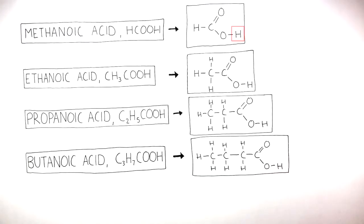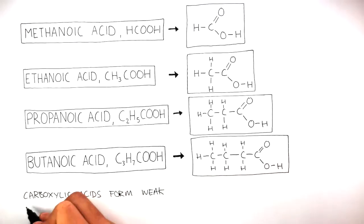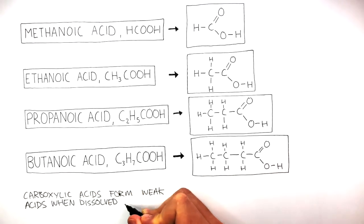It's this hydrogen atom on the carboxylic acid functional group which makes these carboxylic acids acidic. This is because they are able to partially ionize in solution, forming hydrogen ions. So carboxylic acids form weak acids when dissolved in water.